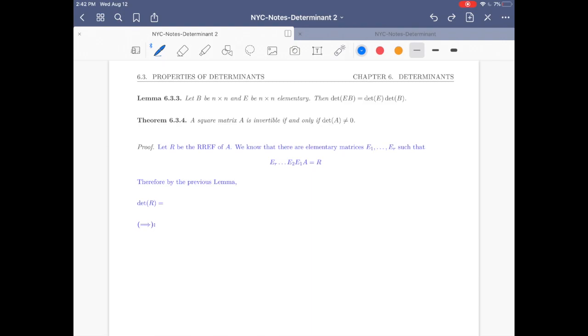Lemma 6.3.3: Let B be an n by n matrix and E be an n by n elementary matrix. Then the determinant of EB equals the determinant of E times the determinant of B. Basically, this says when you have a product of two matrices and the left one is elementary, you're allowed to distribute the determinant.